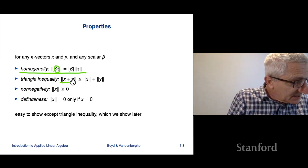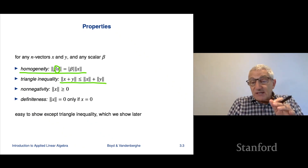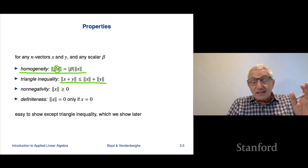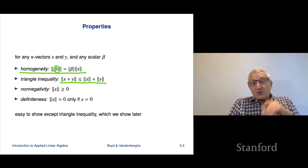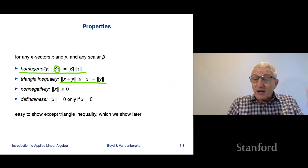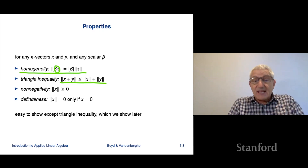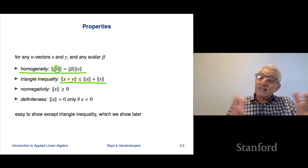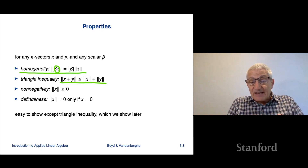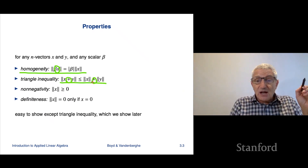The triangle inequality is interesting — it has a beautiful visualization we'll show later. It's not something immediately easy to see; it takes a paragraph to develop and involves completing the square. You can read about it in the book. The triangle inequality says that the length of a sum of two vectors is less than or equal to the sum of the lengths. The first sum is vector addition, and the second is addition of two non-negative numbers.